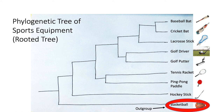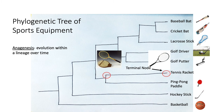It is called a rooted tree because the distance between the OTUs is known, and the order in which they diverge can be inferred by comparison with the outgroup. The outgroup is known to have diverged earlier than all the other OTUs and is a common ancestor of all the OTUs, as it is what roots the tree. In this tree, basketball is the outgroup since it was the first to diverge.